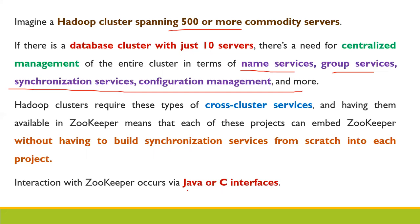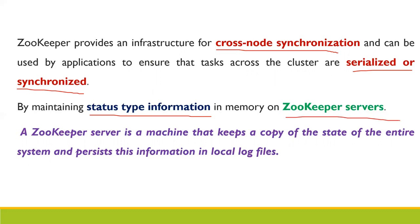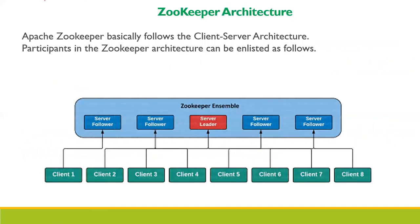Applications interact with Zookeeper via Java or C interfaces using commodity clusters and servers. Zookeeper provides an infrastructure for cross-node synchronization and can be used by applications to ensure tasks across the cluster are serialized or synchronized, by maintaining status information in memory on the Zookeeper server. The Zookeeper server is a machine that keeps a copy of the state of the entire system and persists the information in local log files.